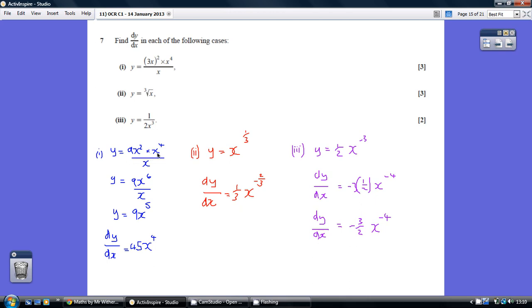x squared times x to the 4 is x to the 6, so this is 9x to the 6 divided by x, giving 9x to the 5. Differentiating is then easy: 5 times 9 is 45, reduce the power by 1.